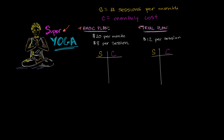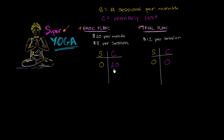Let's think about if I decide to attend no sessions. Under the trial plan, it's $12 per session times zero sessions — I'm not going to have to pay anything, so my cost is zero. Under the basic plan, if I attend no sessions, it's $8 per session but I didn't go to any, so nothing there — but I still have to pay that $20 per month. I have to pay $20 even though I didn't even attend. That doesn't seem so good in that scenario.